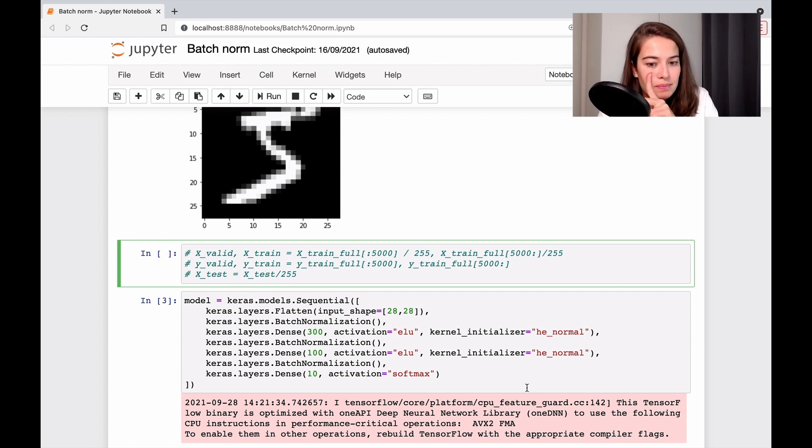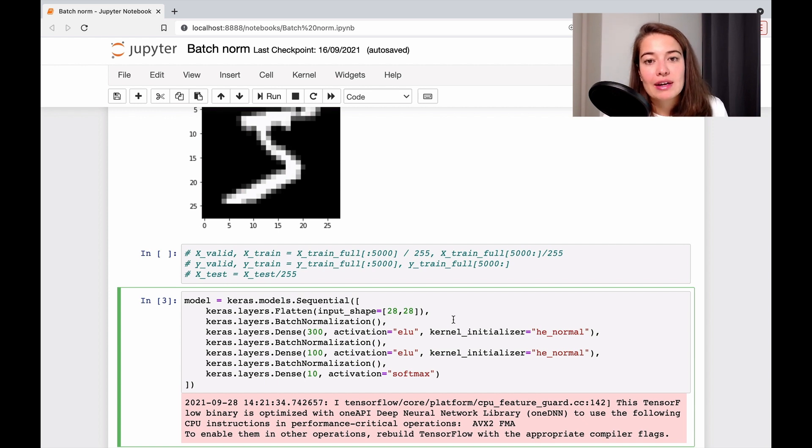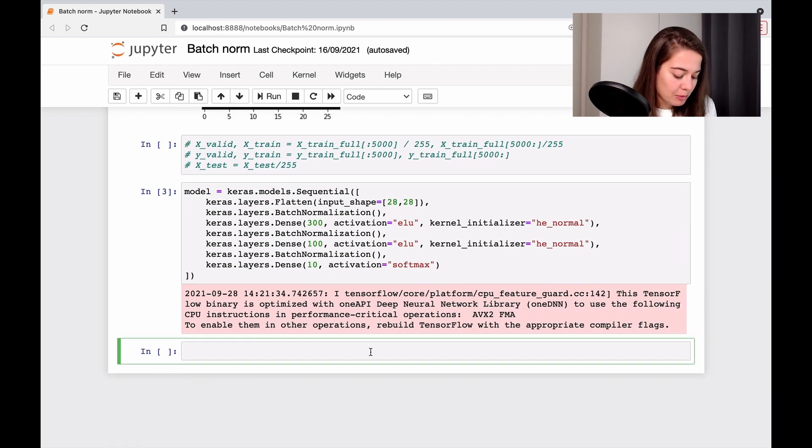One other detail about implementing batch normalization is there is some research out there that claims that it is actually better to do batch normalization before putting the output through activation and activation function. So if you remember from studying neural networks, what happens is you get, let's I'll show you here, we have some sort of input, right, let's call it x.